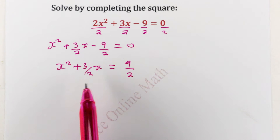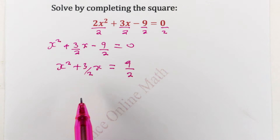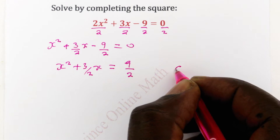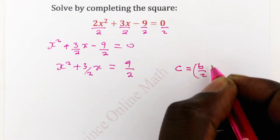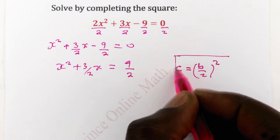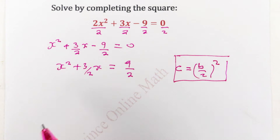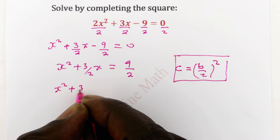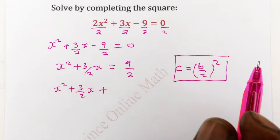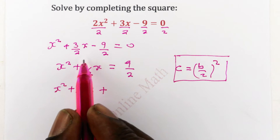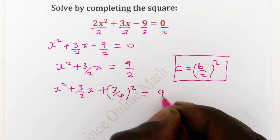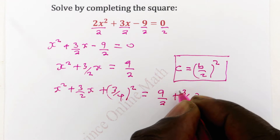The next step is to observe the left hand side of the equation and find that it is an incomplete square. So we complete it by introducing c. Remember the relationship that c is the same as b over 2 squared. So we introduce c: x squared plus 3 over 2x plus half of b squared, where half of b is 3 over 4 squared, is equal to 9 over 2 plus 3 over 4 squared.